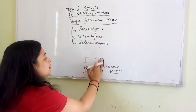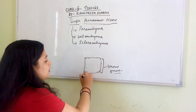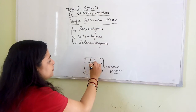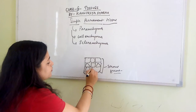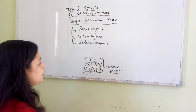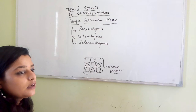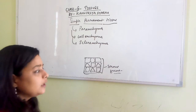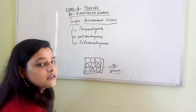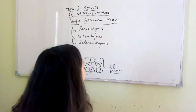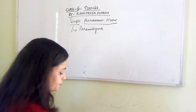Complex permanent tissue, on the other hand, is a group of cells having different functions. Each cell has its own role, so it is made up of different kinds of cells having different kinds of functions — that is called complex permanent tissue.